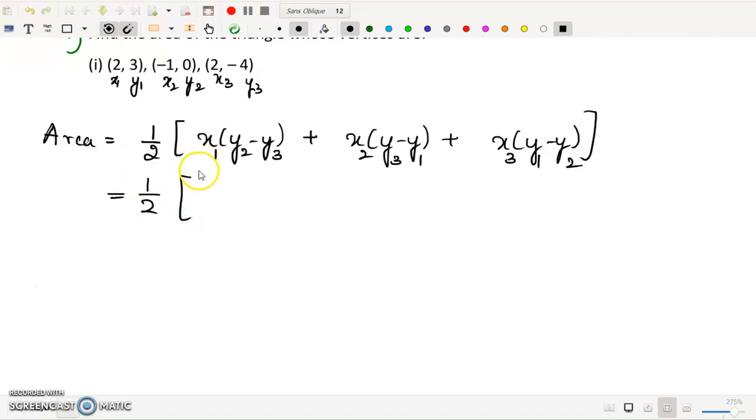Half into, area equals x1 is 2, y2 minus y3. y2 is 0, minus y3 is minus 4. Plus x2 is minus 1. So plus x2 is minus 1, y3 minus 4, minus 3.